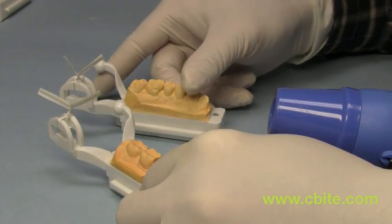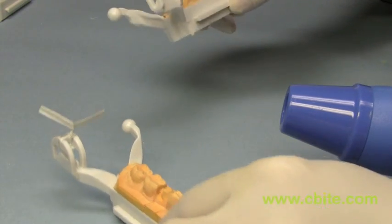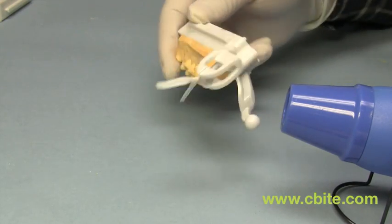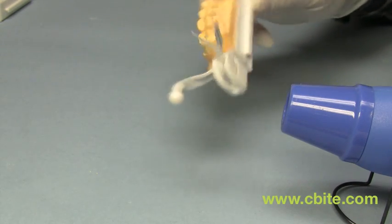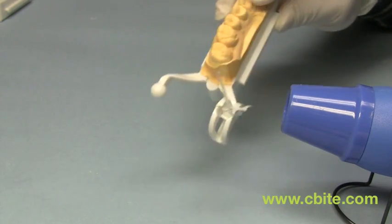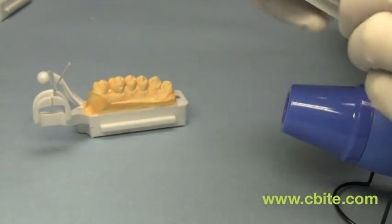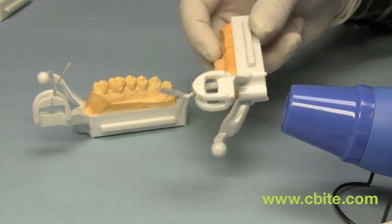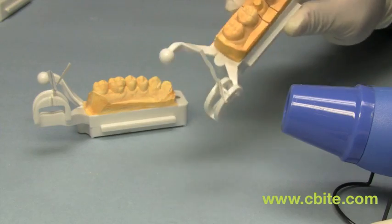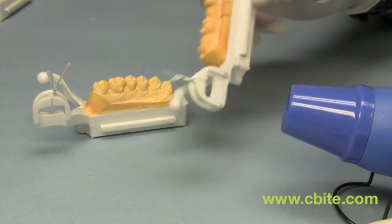Once you have both done, turn on the heater gun and gently heat around the area. Make sure you do not overheat it because you do not want to melt the plastic. Once it's been heated sufficiently, put it aside and do the same for the other. Just gently move it around. Be careful not to overheat.